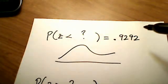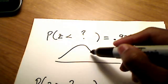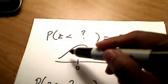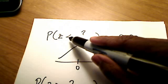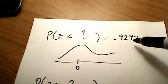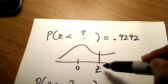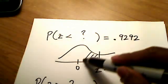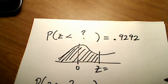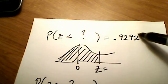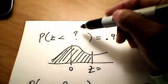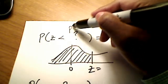Picture-wise, if 0 is sitting in the middle, I'm looking for a z-score that if I shade to the left — because that's a less than symbol — I'm going to get .9292. Now look, that's a lot bigger than .5, so it's got to be a z-number way out to the right. If I shade to the left of that, that's more than half of the area. So I'm looking for a positive number this time. I don't know what it is just yet, but I know it's going to be a positive number.